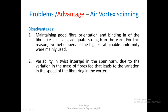The second disadvantage is variability in the twist inserted in the yarn. This happens because of mass variation of the fibers — feeding is not very uniform, and because of that the speed of the fiber ring in the vortex varies. The force applied by the air vortex varies according to the mass of the fibers, and because of this, the twisting becomes highly non-uniform. For these two reasons, the yarn produced by air vortex is not of a good standard in terms of strength or twist uniformity.